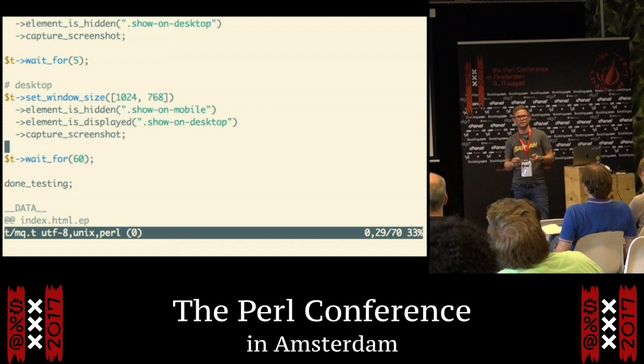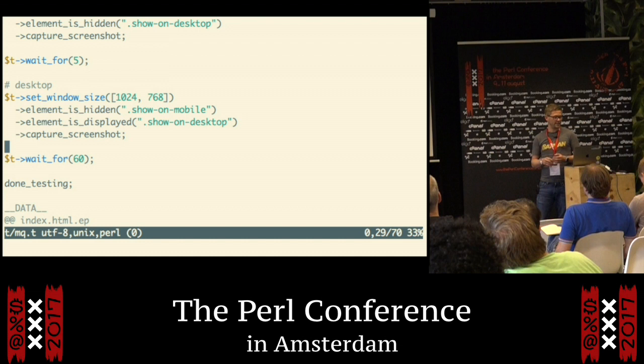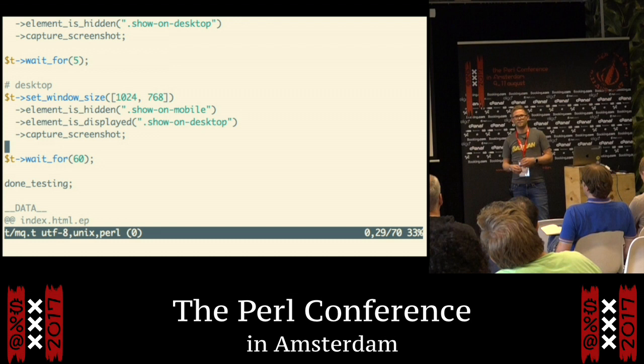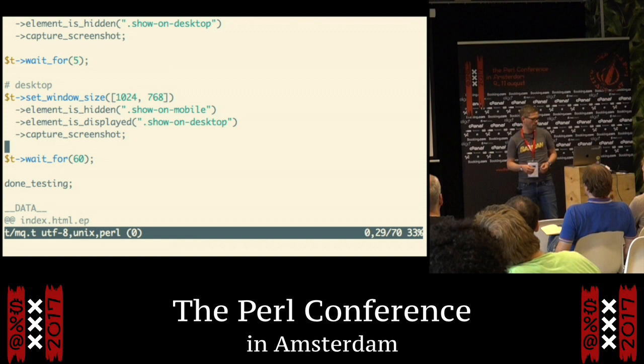A little bit about wait_for: if you give it a number, it's going to wait for that many seconds. But the reason you want to use wait_for instead of just writing sleep is because wait_for is going to keep the Mojo IO loop running. That's important in case you have a single page application that uses a WebSocket — you need to keep running the IO loop so it can exchange data with the server. If you just do sleep 5 instead of wait_for 5, it's going to block the whole process and the web browser will freeze up as well.